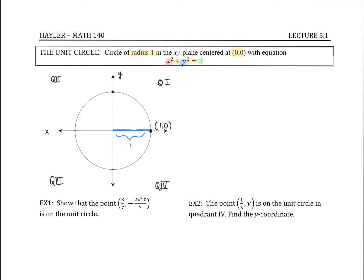Let's go ahead and label these other three important points. The next one up here is going to be (0, 1), because the x value is at 0 and the y value is at 1. Remember, we have the coordinates x, y. Next, we have (-1, 0). And the last one is (0, -1). Okay, so we have those points.